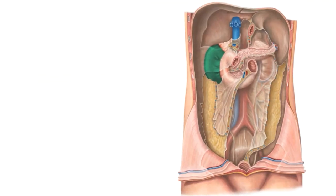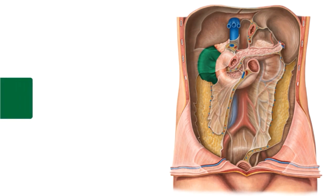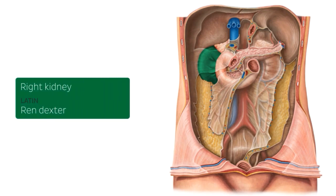Now let's move on to look at the retroperitoneal structures, starting with the right kidney. The kidneys are important in maintaining electrolyte and water balance in the body, as well as having an important role in endocrine function. The right kidney is located posterior to the parietal peritoneum and is slightly lower than the left kidney due to its location inferior to the liver. In this illustration on the right, we can see the diaphragmatic surface of the liver highlighted in green, and we'll talk about the significance of this surface later on in the tutorial.